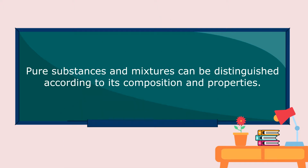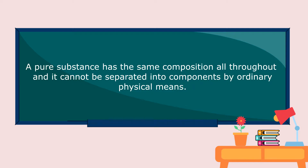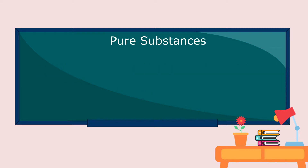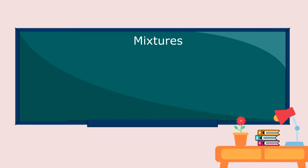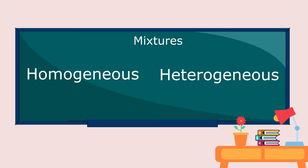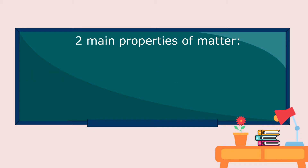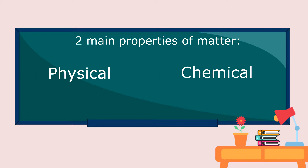Pure substances and mixtures can be distinguished according to their composition and properties. A pure substance has the same composition all throughout and it cannot be separated into components by ordinary physical means. Pure substances can either be an element or a compound. Mixtures are physical combinations of two or more pure substances. Mixtures can either be homogeneous or heterogeneous.